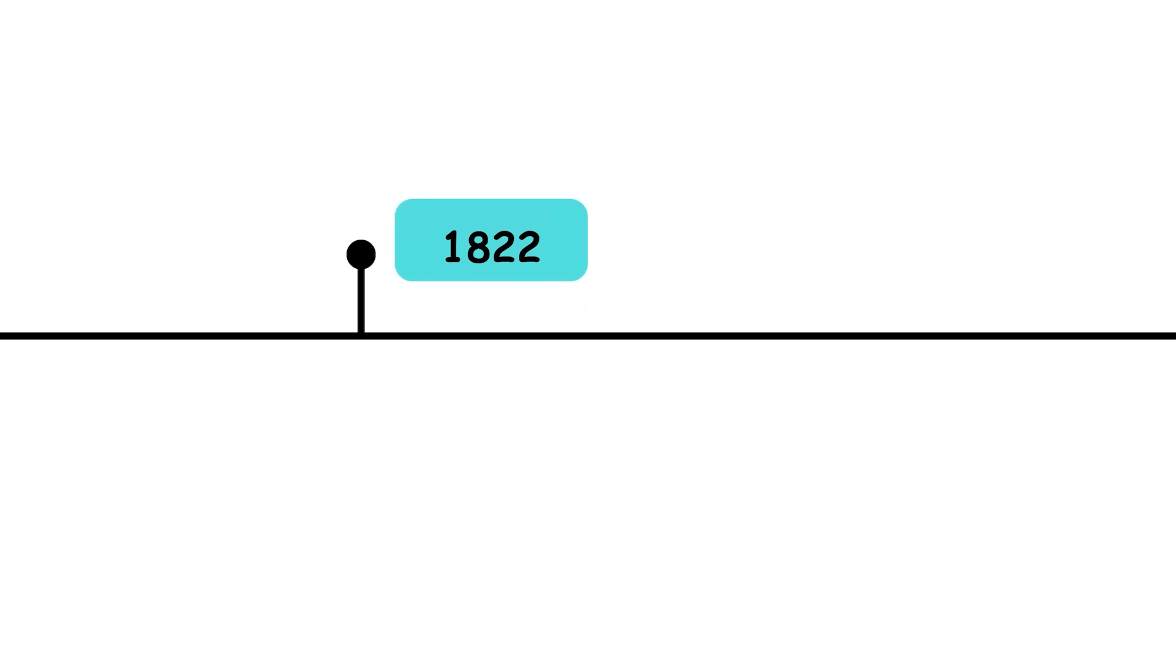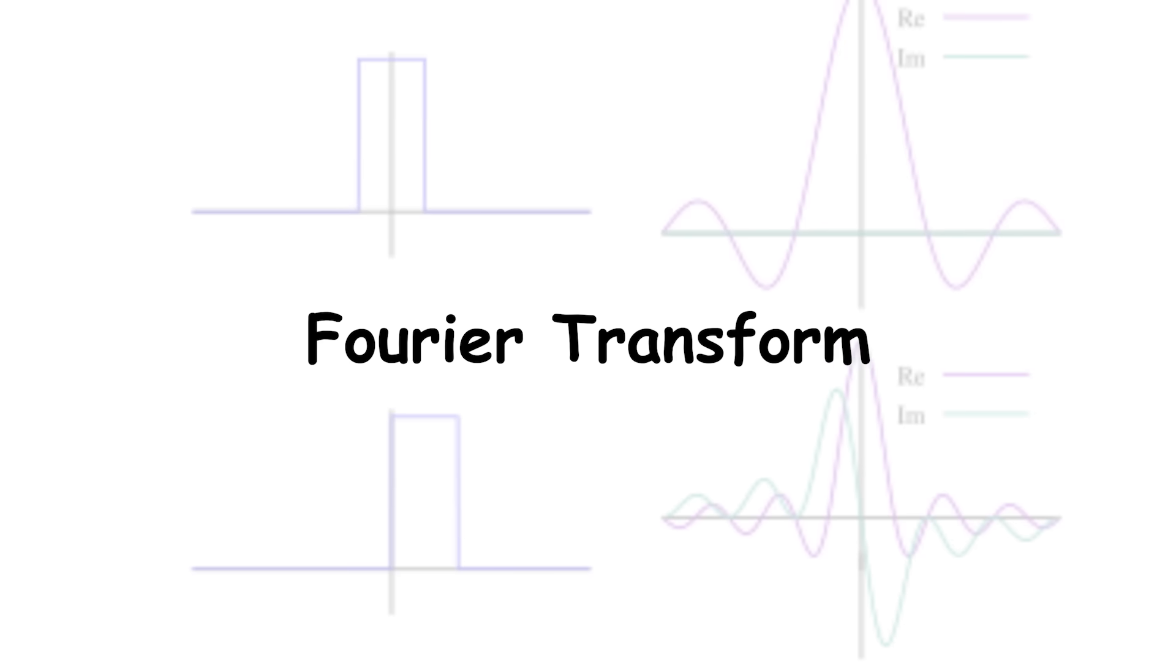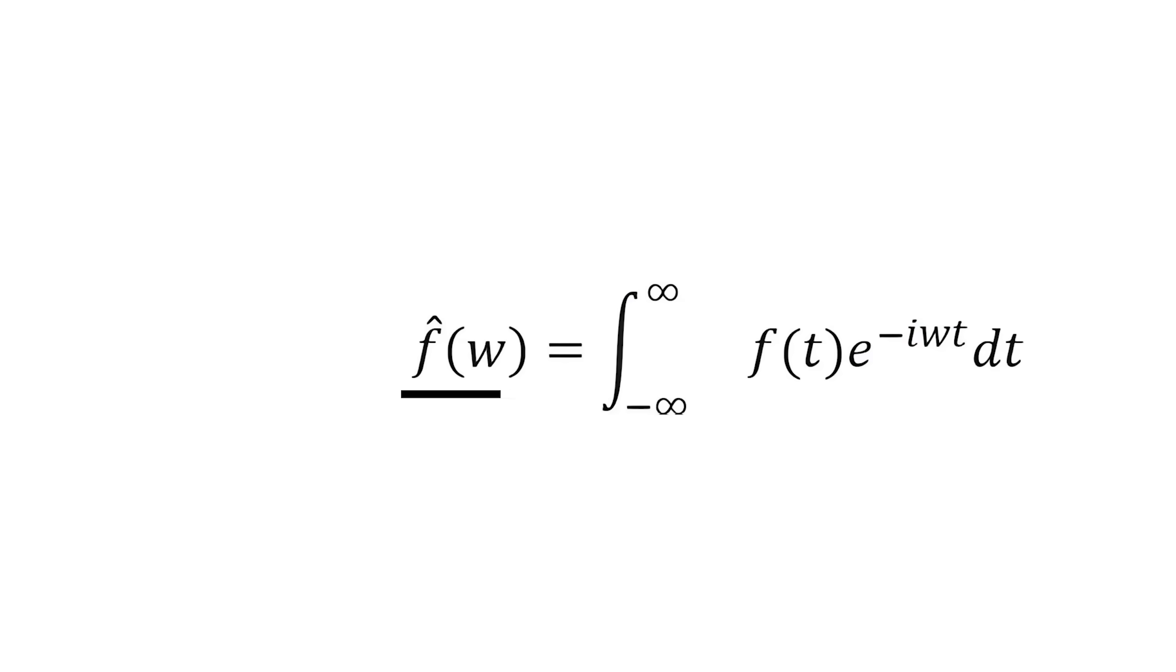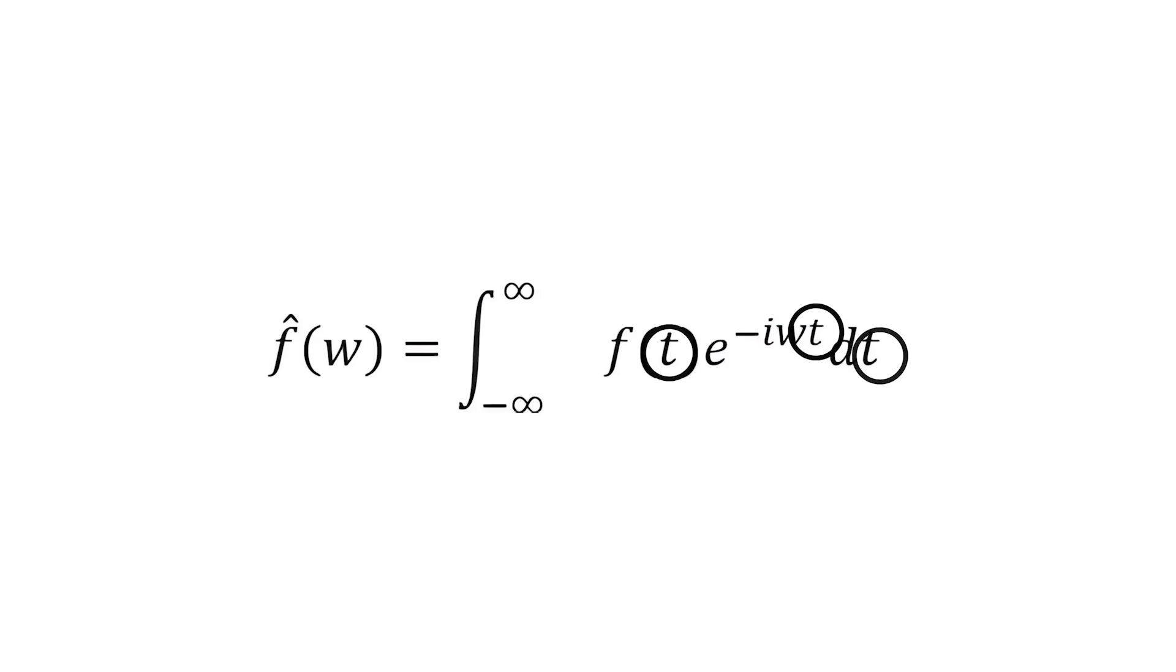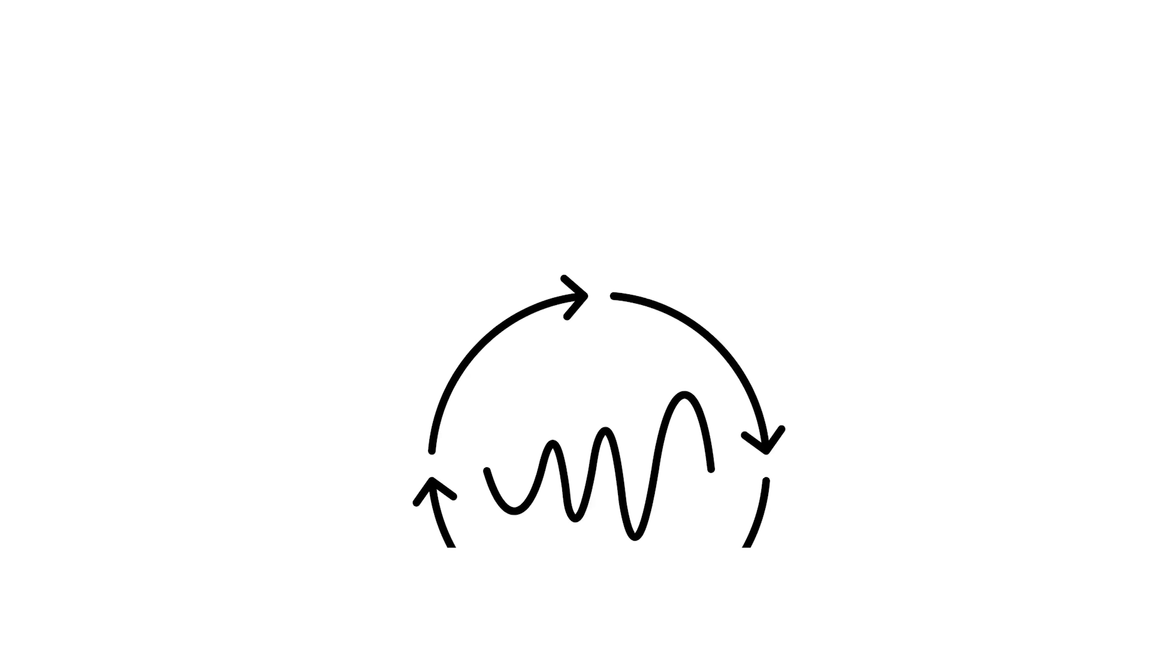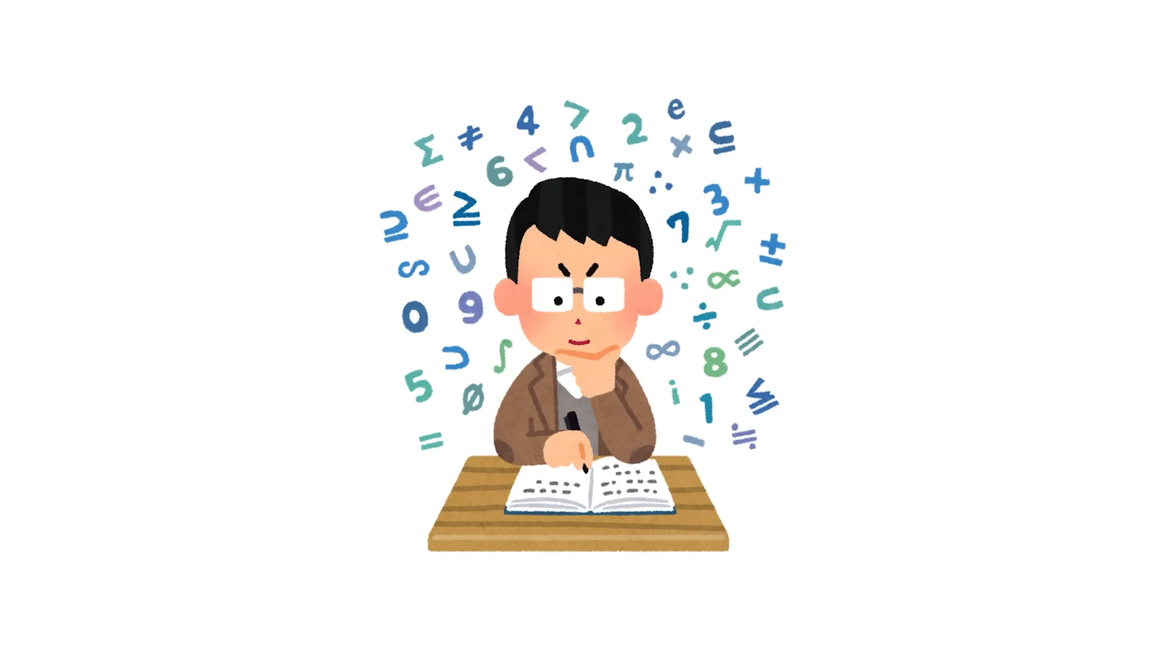1822: Fourier Transform. The Fourier Transform decomposes functions into their frequency components, facilitating signal analysis. It is fundamental in signal processing, physics, engineering, telecommunications, and image analysis, allowing for the efficient resolution of complex problems.